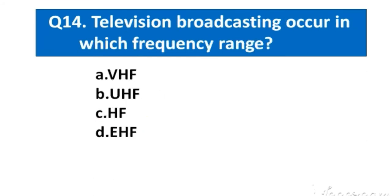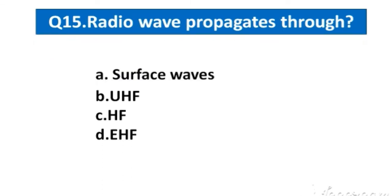Question number 14. Television broadcasting occurs in which frequency range? Option A. VHF, B. UHF, C. HF, D. EHF. The right answer option A. VHF. That is very high frequency.